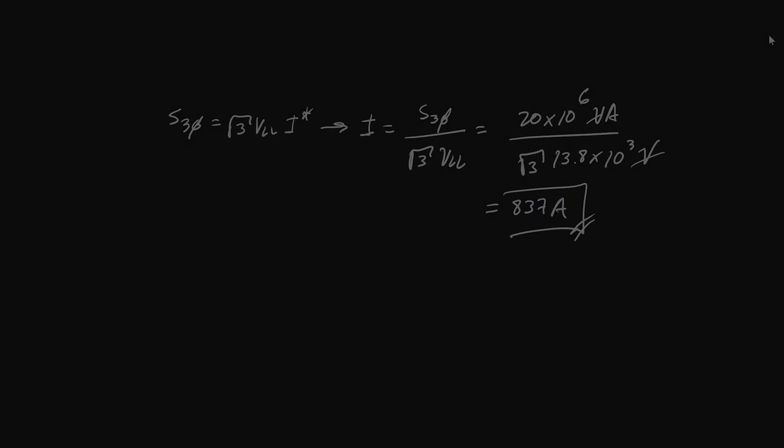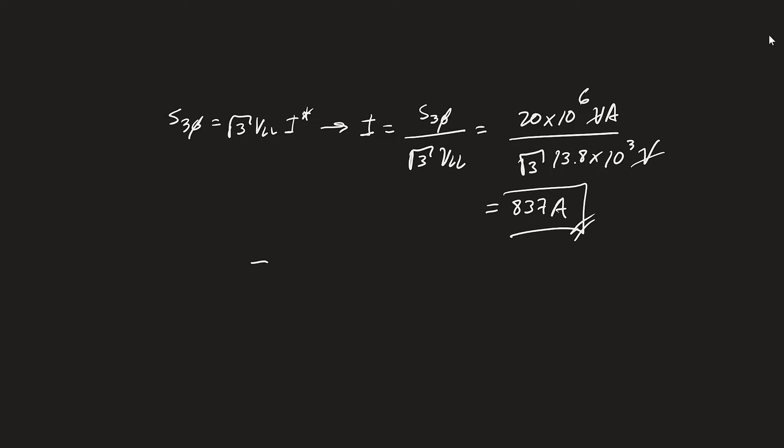So what we need to do is set the pickup of our overcurrent element to some value higher than 837 amps, because this feeder can see up to 837 amps under any unfaulted condition. We want to select our pickup to be slightly higher than that, and we need to apply some margin — typically a 50% margin is sufficient. So we're going to take 837 amps, multiply by 1.5, and that will be our pickup, giving us a 50% margin above maximum load current.